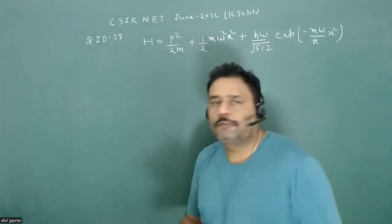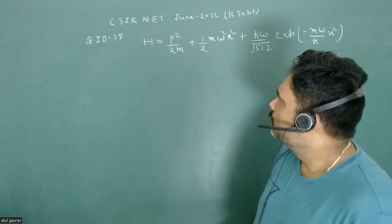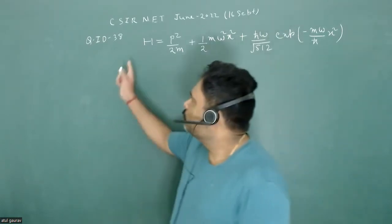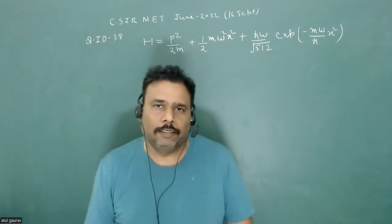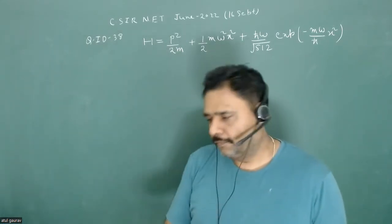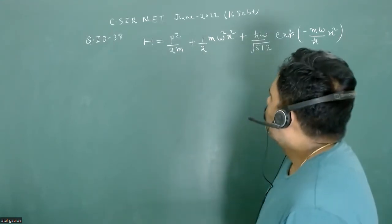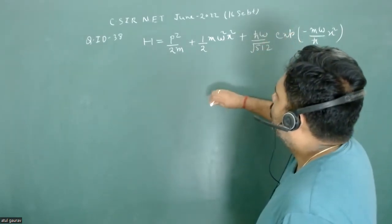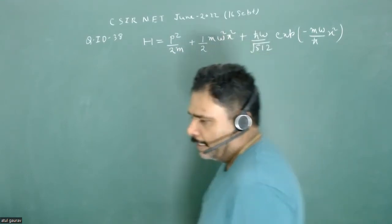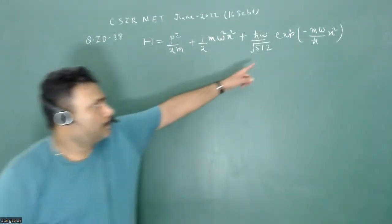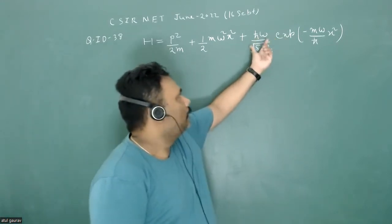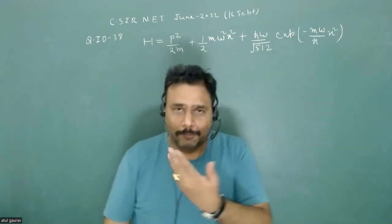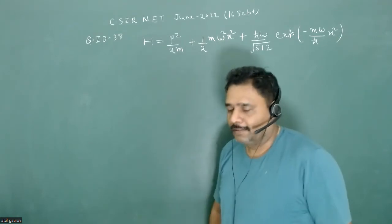Hello students, let's solve one more problem from the CSIR NET June examination held on 16 September. The question ID is 38, and this is a problem from perturbation theory in quantum mechanics. The third term is the perturbed term, and the perturbation is h-bar omega divided by root 512, times exponential of minus m omega squared over h-bar squared times x squared — a Gaussian perturbation.